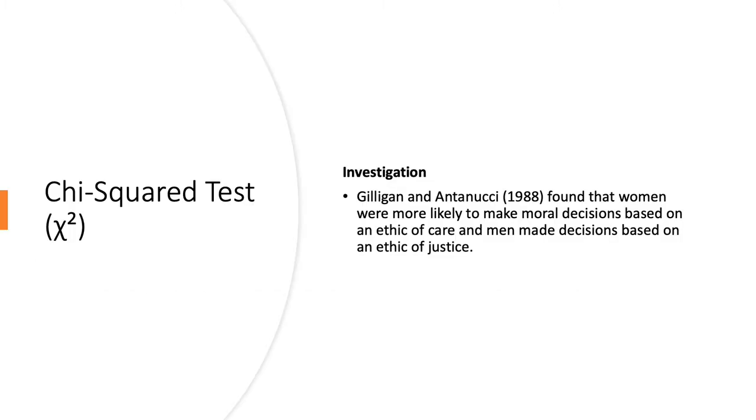The investigation we're going to look at today is taken from a real study by Gilligan and Antonucci and they found that women were more likely to make moral decisions based on an ethic of care and men made decisions based on an ethic of justice. So moral decisions, anything to do with right or wrong, women cared more about maybe other people's feelings and emotions, whereas men just based their moral decisions on what was fair and what was right.